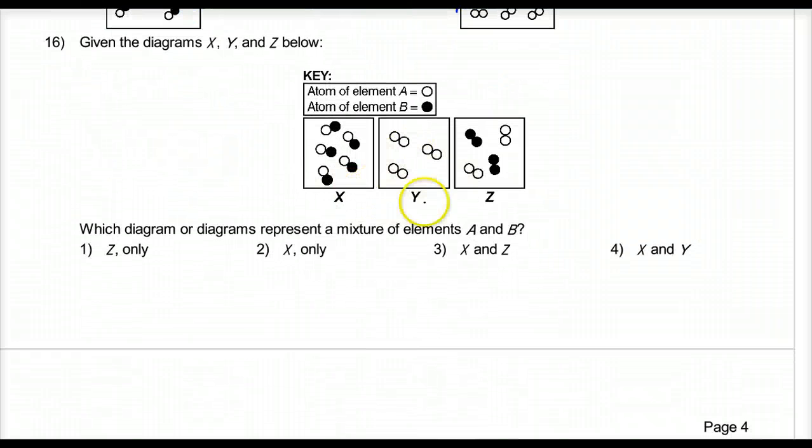Which diagram represents only a mixture of elements A and B? So elements A and B. So a mixture of elements. Well, it looks like to me that's C. Here's a compound. Here's just one element. Here's a mixture of two different diatomics. So choice one.